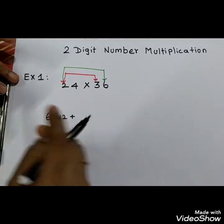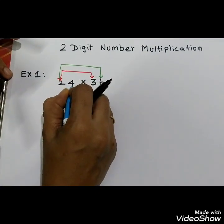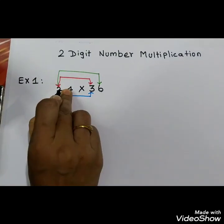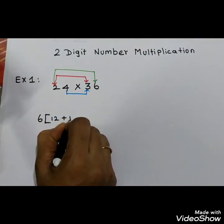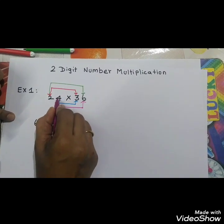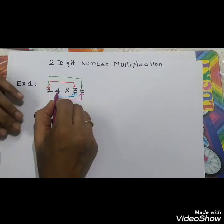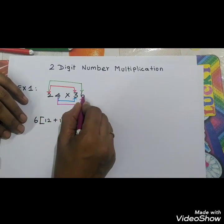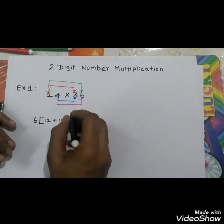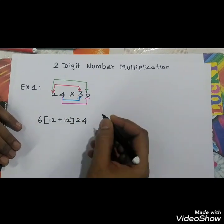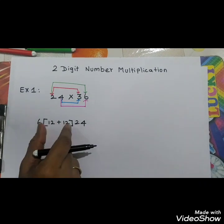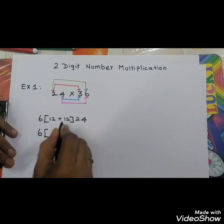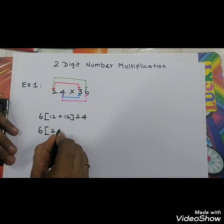Put an add symbol. Step 3: take the second digit of the first number, multiply the first digit of the second number — 4 times 3 is 12. Step 4: take the second digit of the first number, multiply the second digit of the second number — 4 times 6 is 24. Now add the middle values in the bracket: 12 plus 12 equals 24.